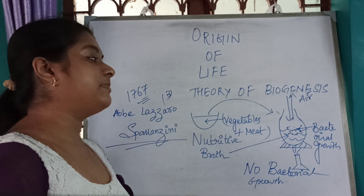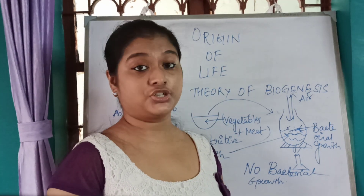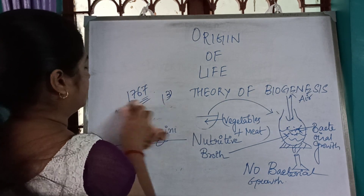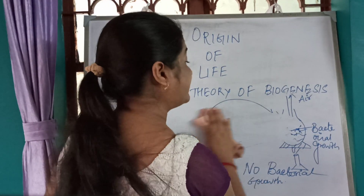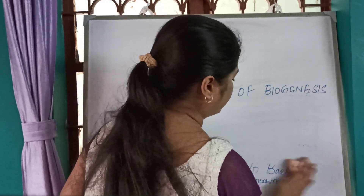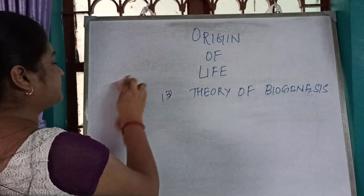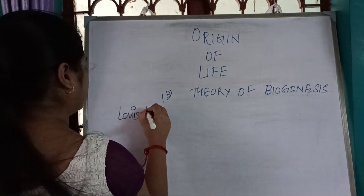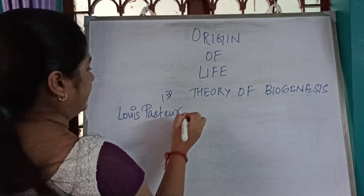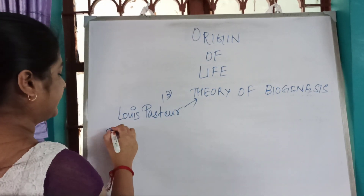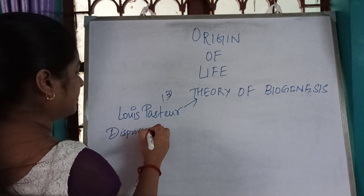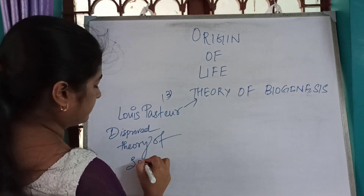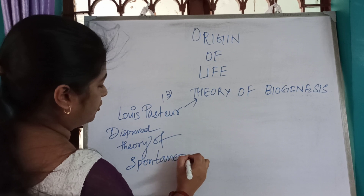Proving the theory of biogenesis and disproving the theory of spontaneous generation was further demonstrated by another famous scientist — Louis Pasteur — around the year 1850s. He proved the theory of biogenesis and disproved the theory of spontaneous generation.